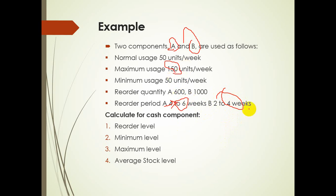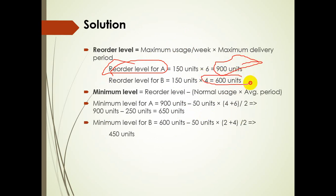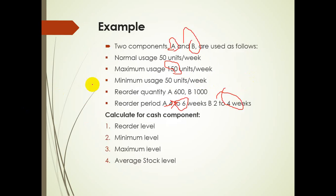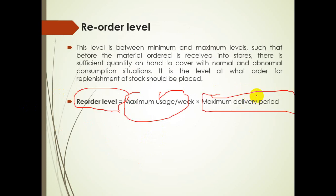For product A: 150 × 6 (maximum delivery period) = 900 units. For product B: 150 × 4 (maximum delivery period) = 600 units. So the reorder level for A is 900 units and for B is 600 units.